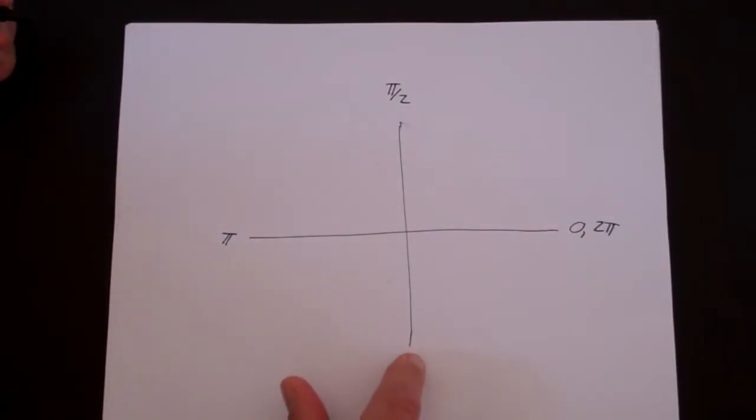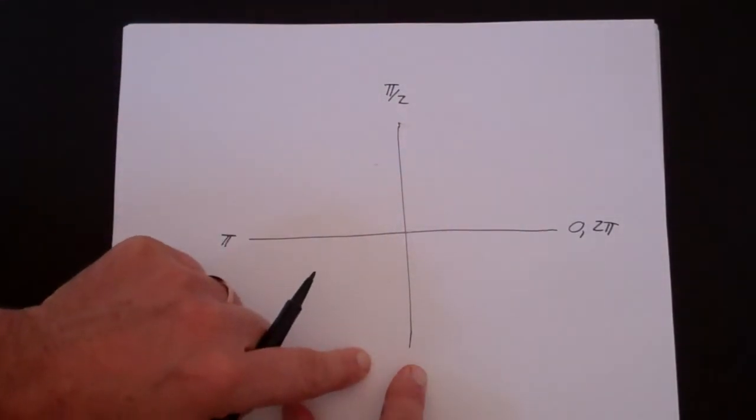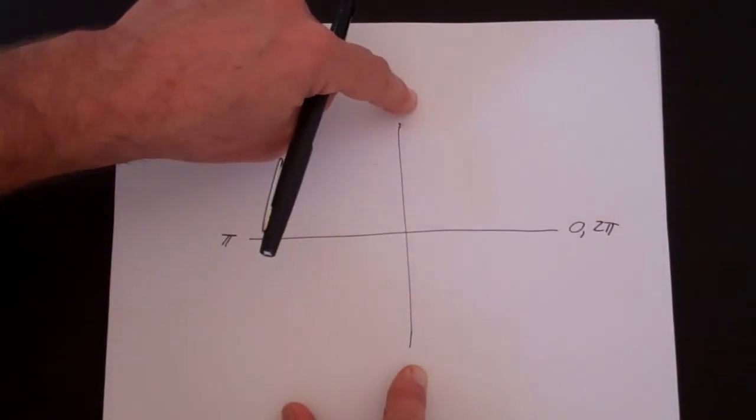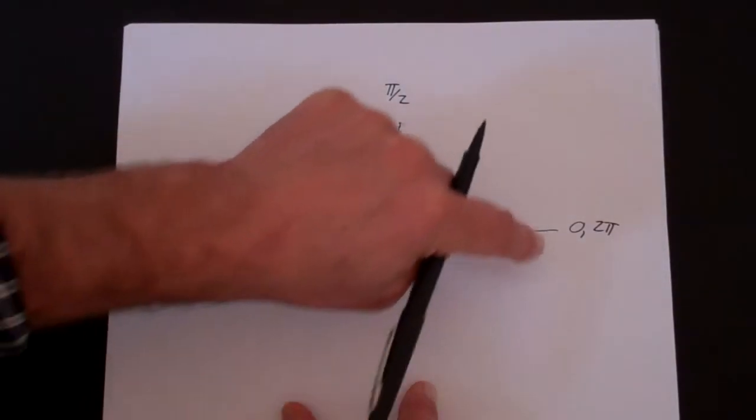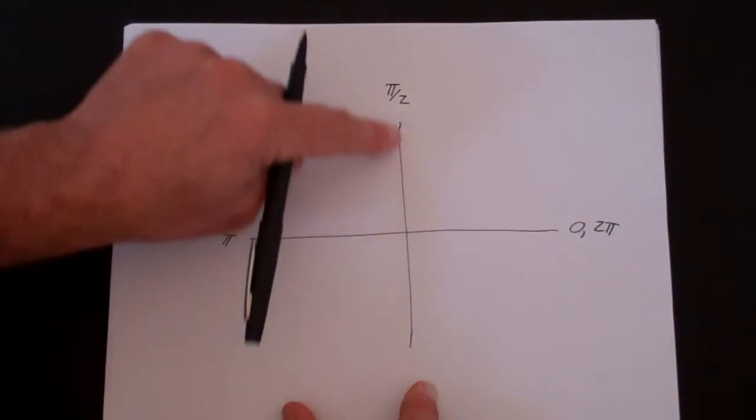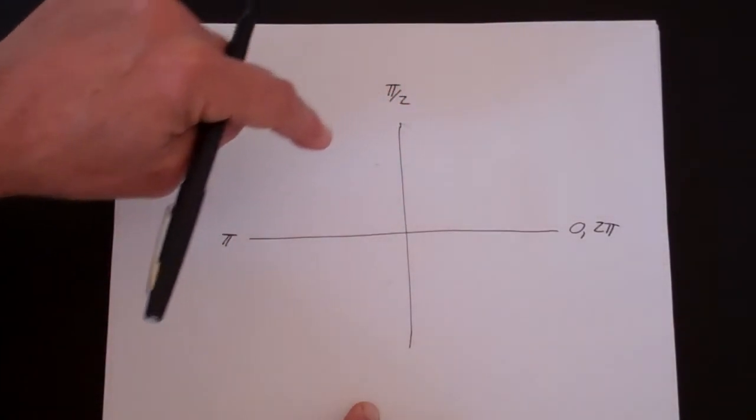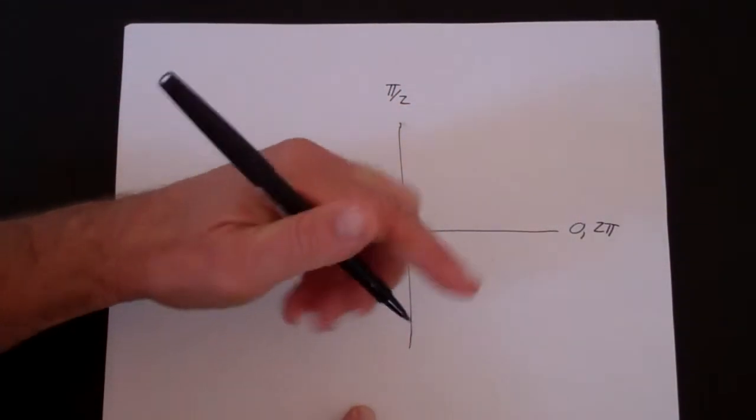Now let's think about this angle here. One way to think about this is this 1 quarter, 2 quarter, 3 quarters. This is 3 quarters of a circle. Each quarter is π over 2, so that's 1 π over 2, 2 π over 2, 3 π over 2.